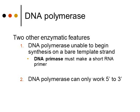DNA polymerase has other features that cause a few problems. First, DNA polymerase is unable to begin synthesizing a DNA strand on a bare template strand, so we have to put on something called a primer. Another enzyme called DNA primase puts on a short RNA primer, signaling to DNA polymerase where it should start synthesizing the new DNA strand. The other problem is that DNA polymerase only works going in the five prime to three prime direction, which is a problem because DNA is anti-parallel—the strands go in opposite directions.